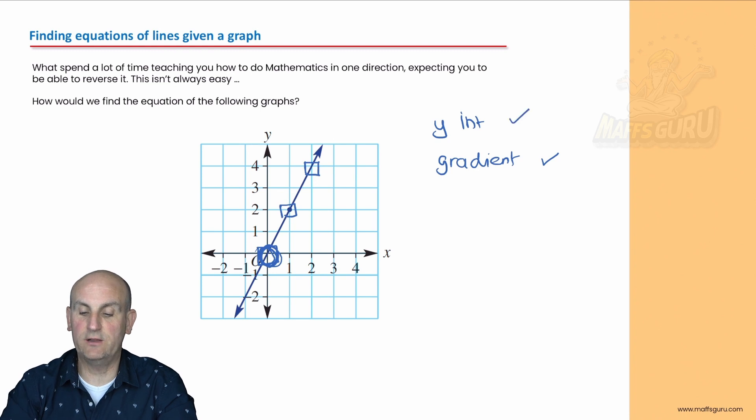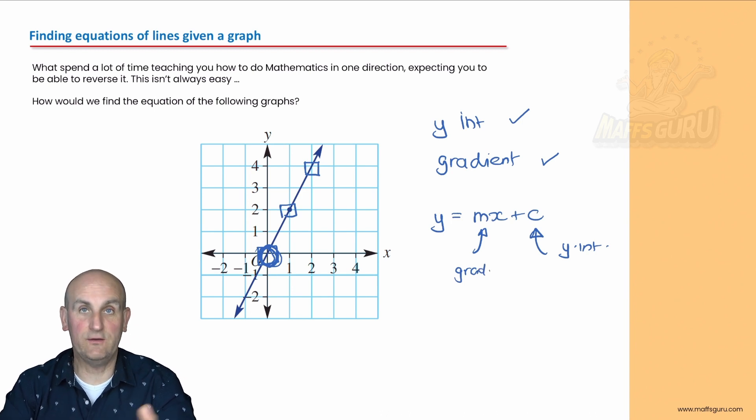All I ever need to know is two points on the line. If I know two points on the line I can find my gradient. If I can read off that value there where it crosses on the y-axis I have my gradient. That just means I can use the equation y equals mx plus c to help me. That value of c is my y-intercept and that value of m is my gradient.